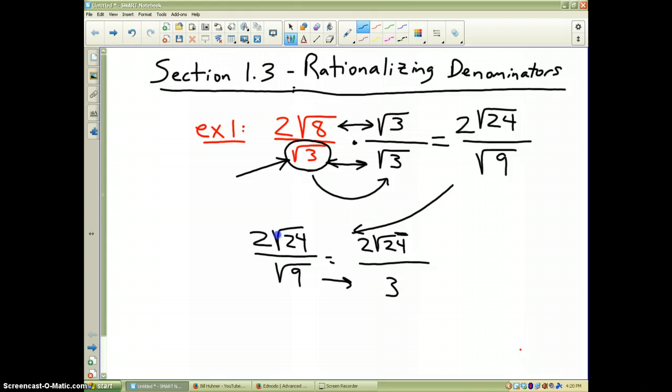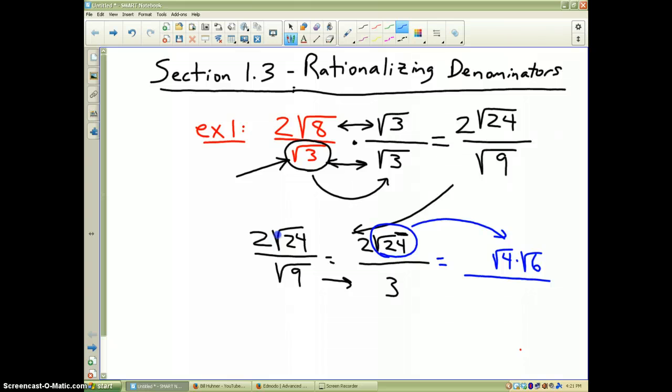Now, are we done? The question is, is there a large perfect square that goes into 24? Just like we did in example number 2. And the answer is, yes there is. The largest perfect square is 4. So I can write the square root of 24 as the square root of 4 times the square root of 6. The 2 just stays there in the numerator and the 3 just stays there in the denominator.